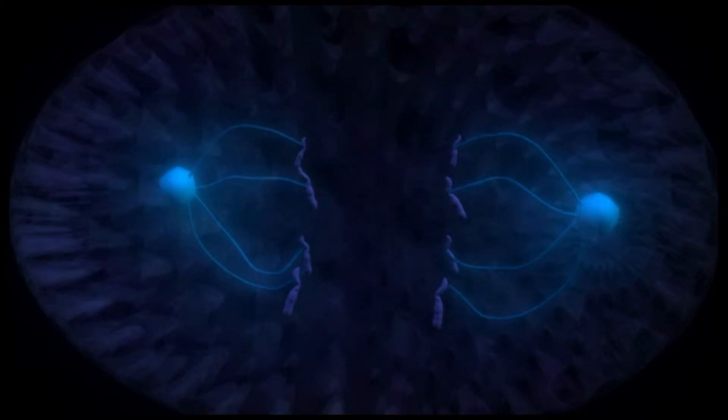In anaphase, the chromosomes are divided and move away via its spindle fibre.